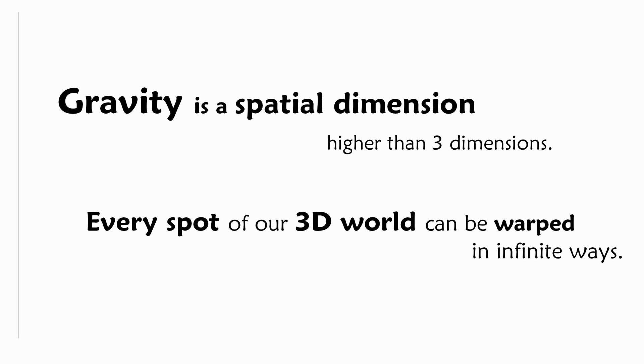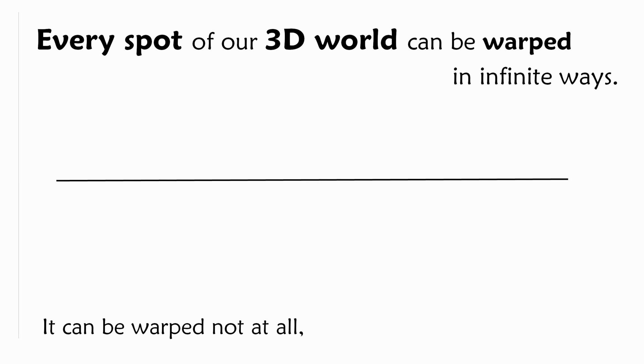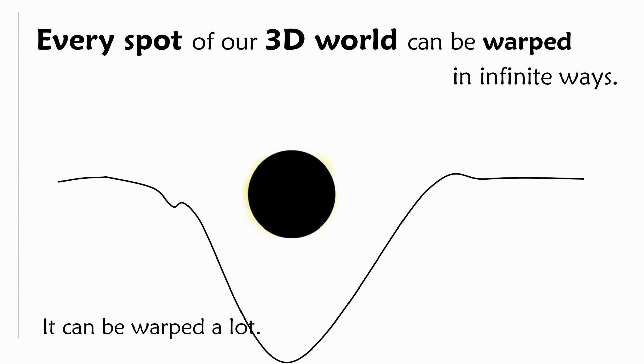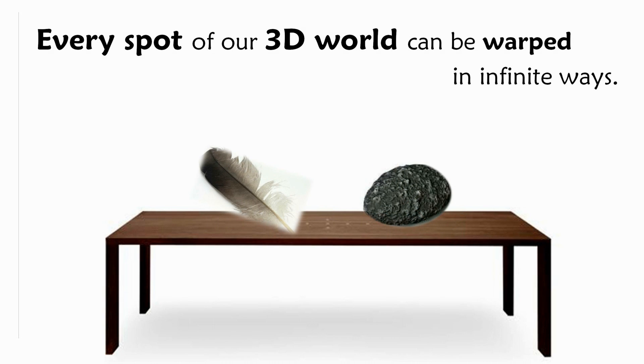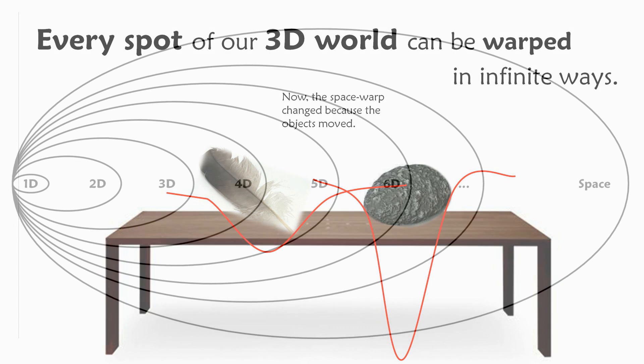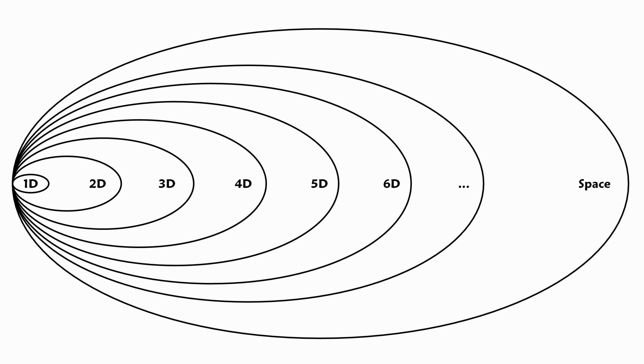This leads me to say that gravity is a spatial dimension as well, higher than the three dimensions. Every spot of our three dimensional world can be warped in infinite ways. It can be warped not at all, it can be warped a bit, it can be warped a lot. Here is another example. Looking at a table with a stone and a feather. The stone bends space more than a feather. Swapping the objects means that the space the objects occupy has now a different level of space warp. So again the question, now that we know that time is all higher dimensions, which dimension is gravity? And the answer is that it's of absolutely no interest. Which dimension is time and gravity and which one is first? The only thing important is that both time and gravity are both higher dimensions than three dimensions.